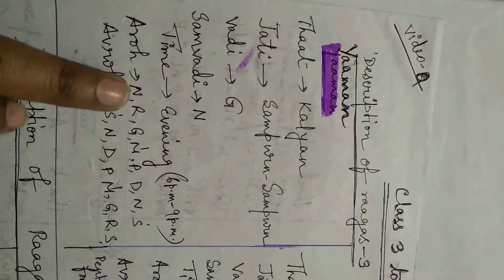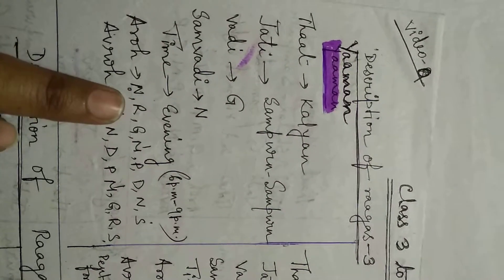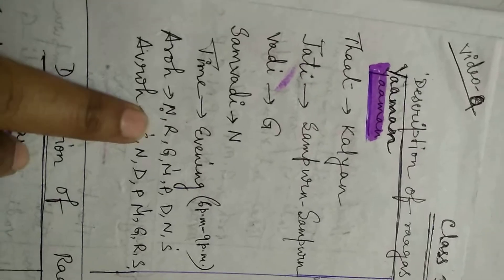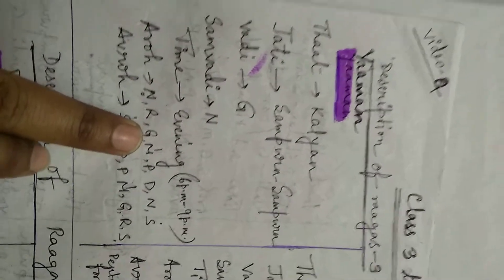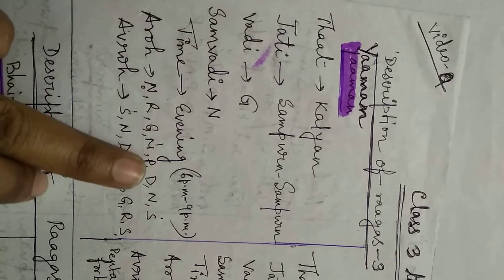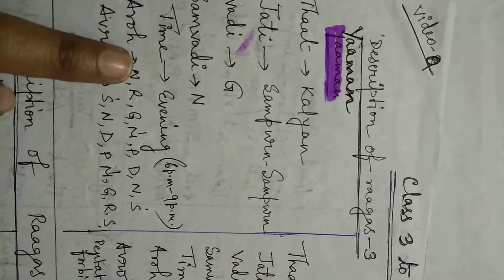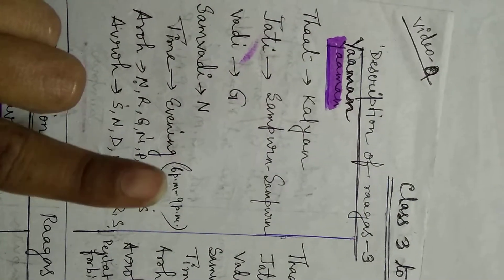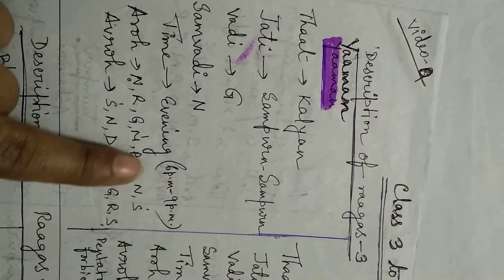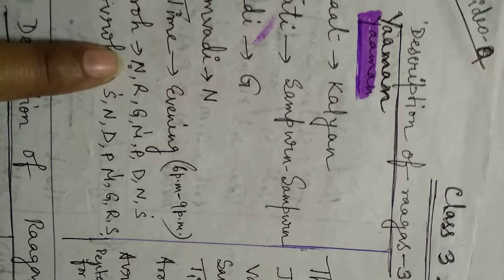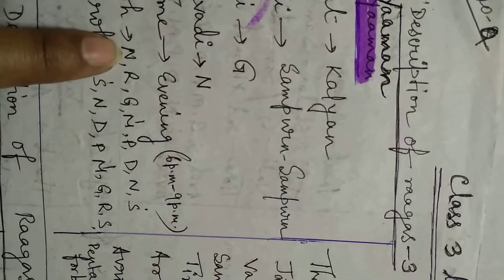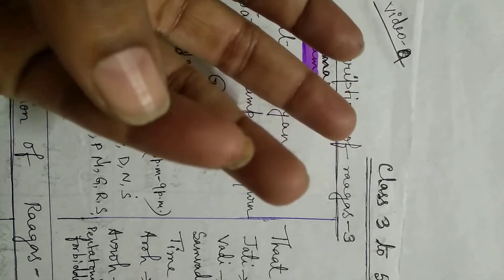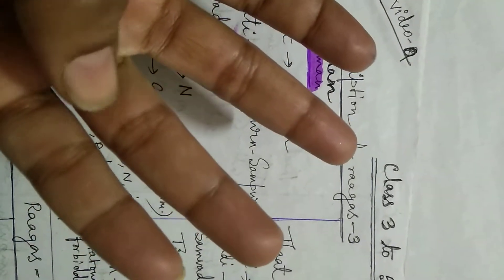Ni, re, ga, ma, pa, dha, ni, sa. So at the beginning we are starting with ni and here one more ni is there. So ni will be counted for one time only. This is the repetition of the first ni, so we will not count it for the second time. So how many notes are there? Ni, re, ga, ma, pa, dha - again ni is there, so it will not be counted - and sa. So seven notes are there.